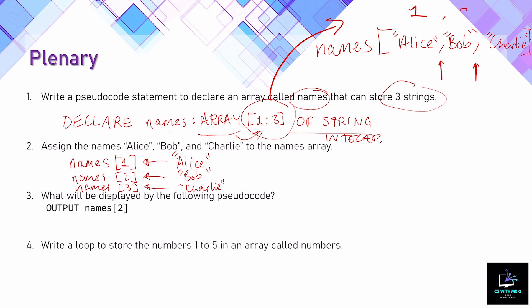Going back to the first question, the array has positions one, two, and three. Using those positions we can answer the next question: what will be displayed by the following pseudocode? OUTPUT names[2] — names is the array name, position two is Bob — so the output would simply be 'Bob'.